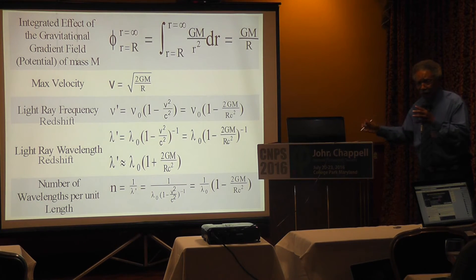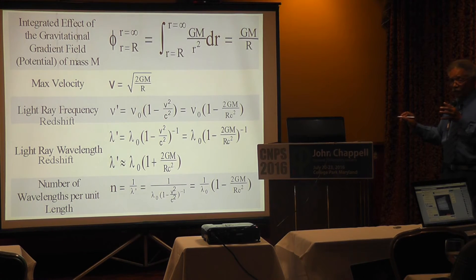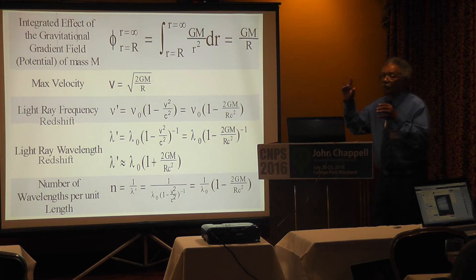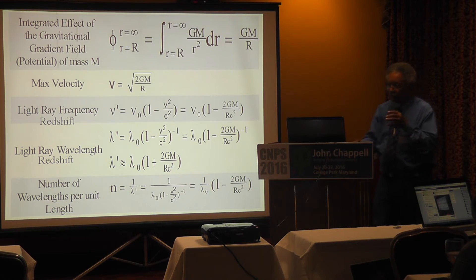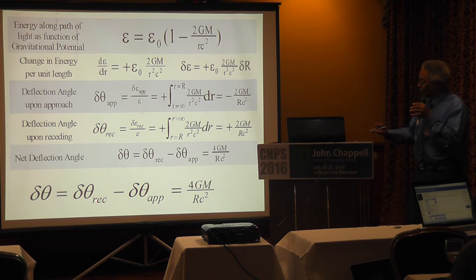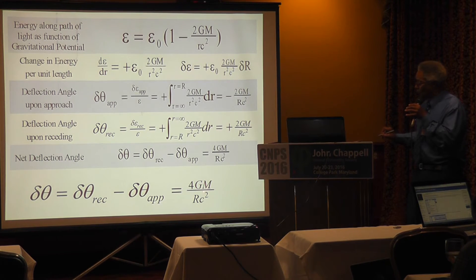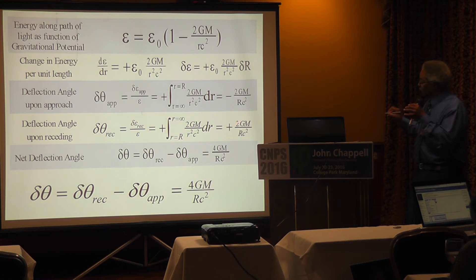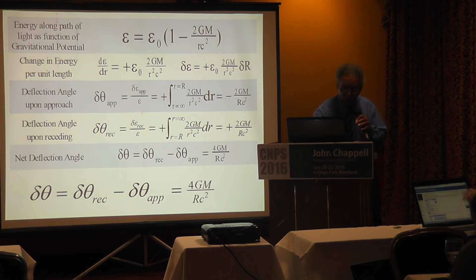Using the approaching component — contributing 2G/RC² with a negative sign — and the receding component — contributing +2G/RC² — you bind these two effects. The minus signs cancel, giving you plus 4G/RC². Each one contributes 2G/RC², and together you come up with 4G/RC². That's the bending based on the least time effect — the same result as general relativity, derived from classical minimum time principles.